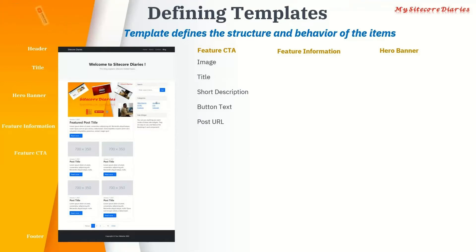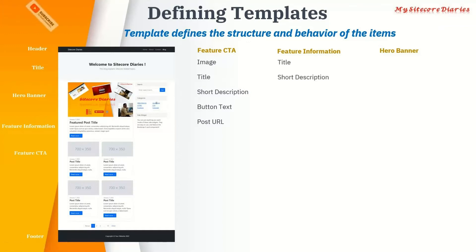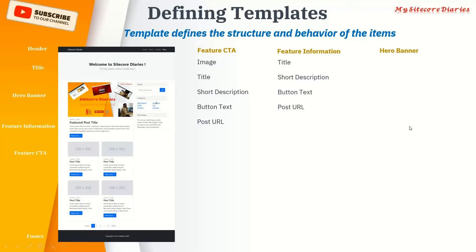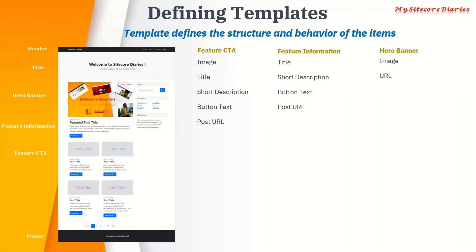What is required for the feature information part? You will need a title, a short description, and a button text. On click, it will redirect to some other URL. For the hero banner, what is required is an image and a URL — if you click on it, it might go to another page. So that is the information it holds.